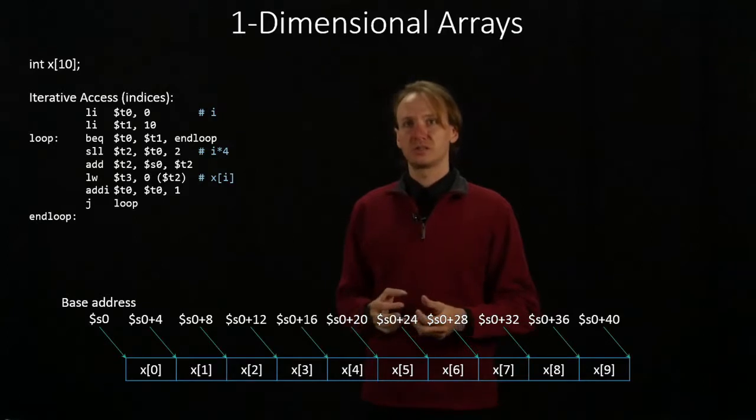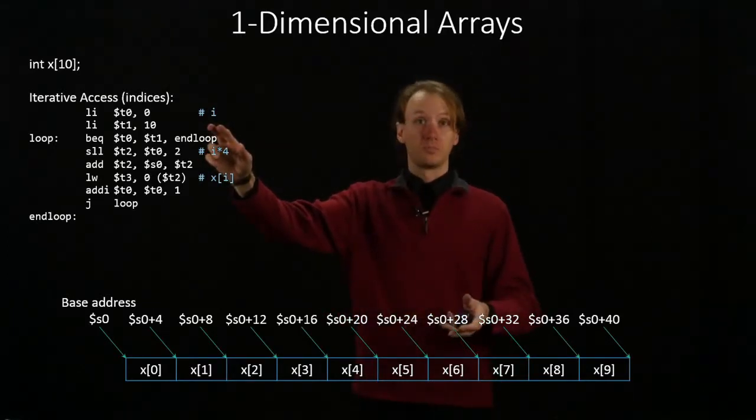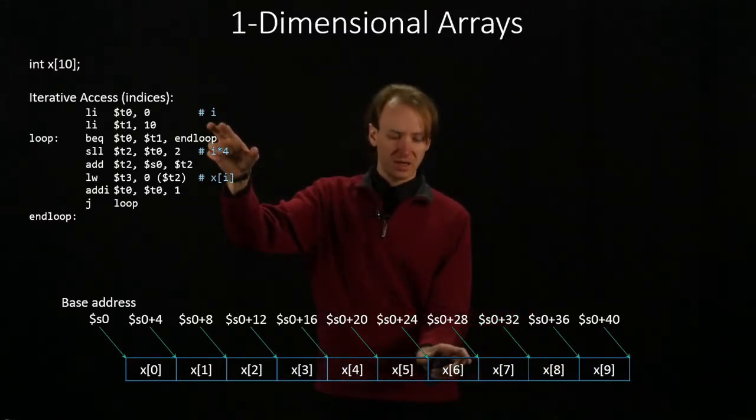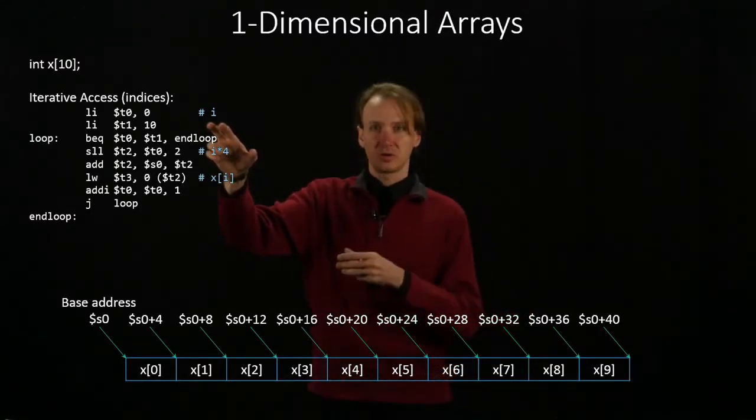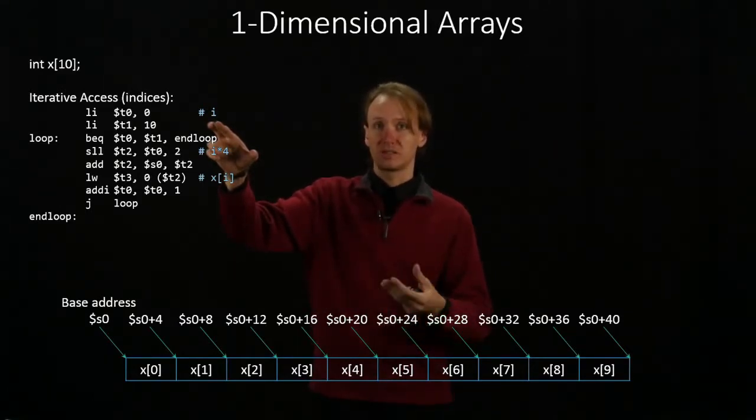Now to access one of those elements, first thing I need to do is multiply that index i by 4. Again, each of the elements in my array are 4 bytes in size, so I need to scale my index by 4, by the size of that element.